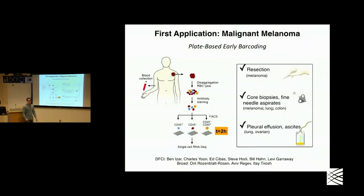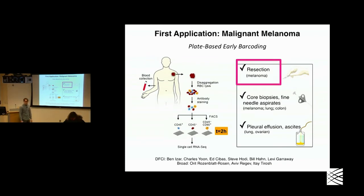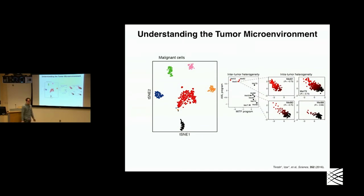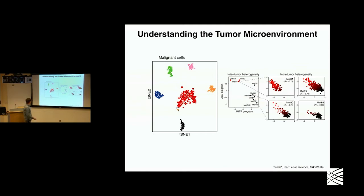When I first came to MIT, I joined Alex's lab. One of the first projects I started working on was profiling malignant melanoma — taking tissue resections from tumors of patients with malignant melanoma, disaggregating their tumors, staining and sorting them and running plates. With that data, we were able to identify malignant and non-malignant cells, and within the malignant cells, we were able to identify inter- and intra-tumor heterogeneity, including differences in cell cycling within tumors.